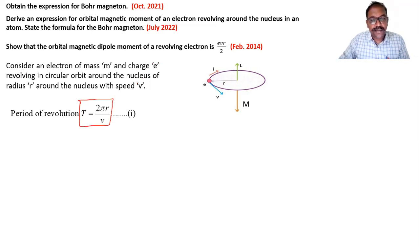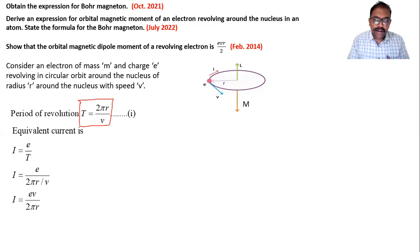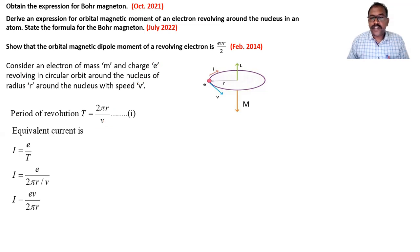The period of revolution of the electron is given by T = 2πr/v. We can obtain the equivalent circulating current using I = charge/time = e/T. Substituting the period T, we get I = ev/(2πr). This is the current.